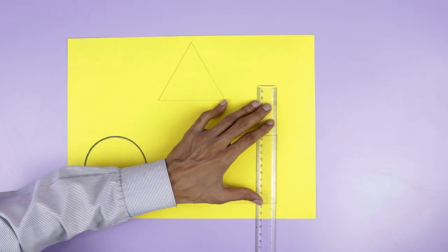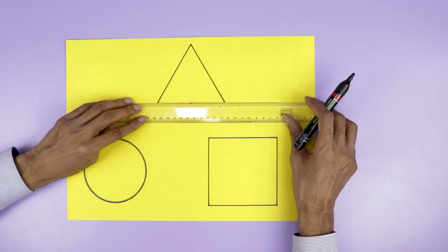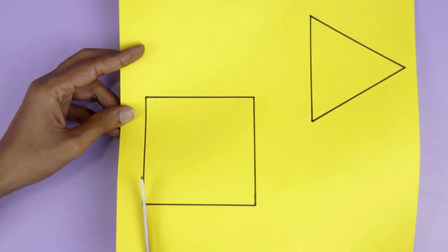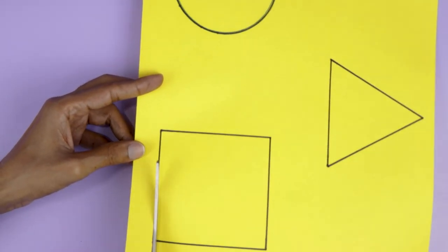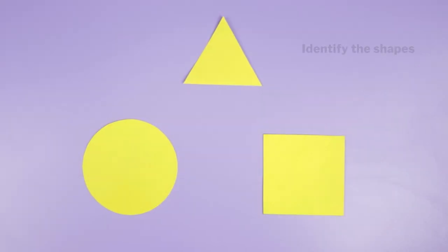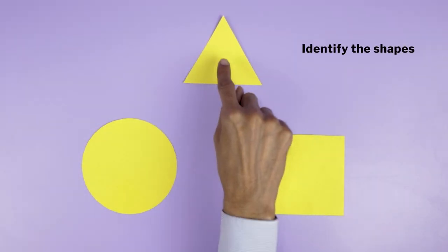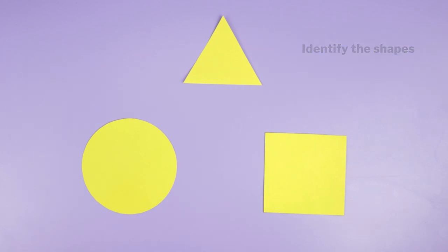For the first activity, we will be showing different geometrical shapes to the students to enhance observational learning. For this activity, we need cardboard or paper along with scissors. Cut out basic shapes like square, triangle, circle, etc. Ask the students to observe these shapes carefully and note their observations in their books.